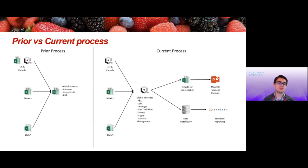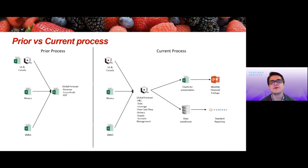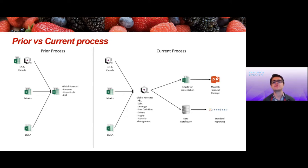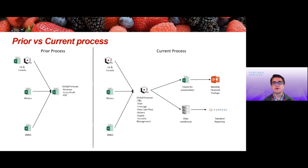After that, we changed the process to full adoption of Quantrix for forecasting in the US and Canada. Mexico does a lot of the work in Quantrix but the data input at the very end comes in database format, and something similar happens for Europe and Africa. Instead of taking that information into a single Excel consolidation sheet, we took all this information through a combination of data pushes, data links, and other processes into a Quantrix model where we consolidate our global P&L, debt, leverage ratios, free cash flows, drivers, expected supply, and scenario management.